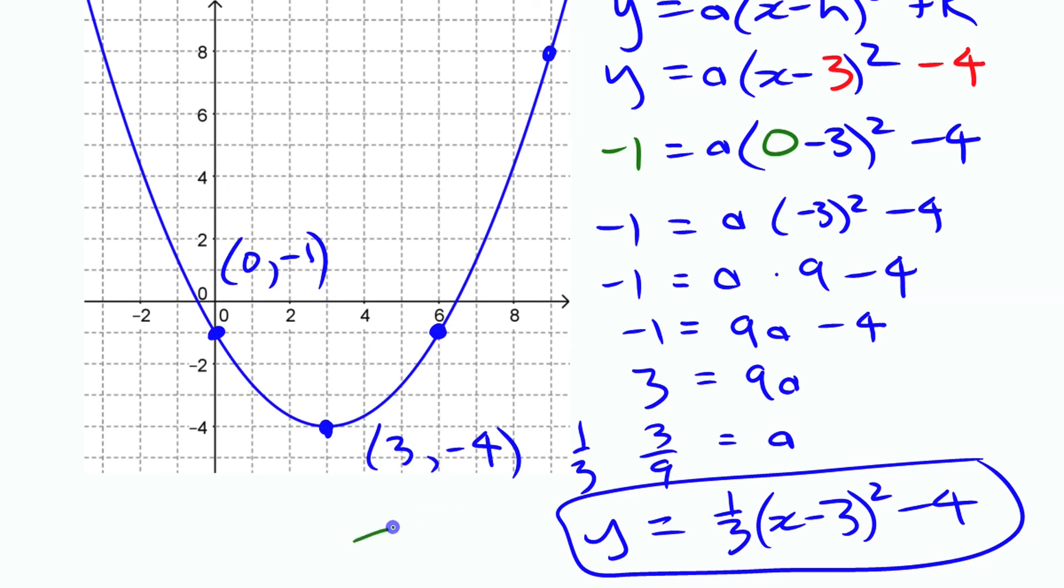You can again also find the value of a by looking at the shape. So again, just comparing what it would normally be. Normally it would be 1 squared is 1, 2 squared is 4, 3 squared is 9. So normally it would be 9. Here it's 3. It's 3/9 as high. That's where that comes from. That's the other way of getting it. Either way is fine.